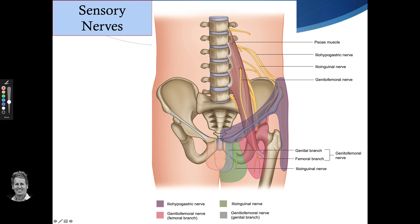You can see the psoas muscle here, and you can actually see the genitofemoral nerve penetrating through the psoas major. The iliohypogastric and the ilioinguinal basically come from L1 and then come down.